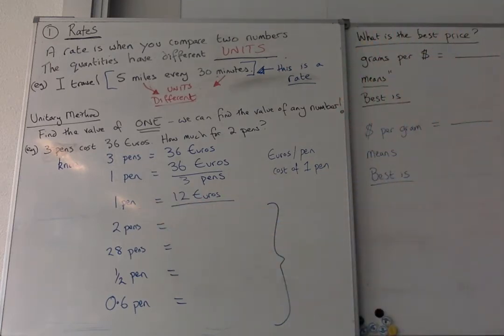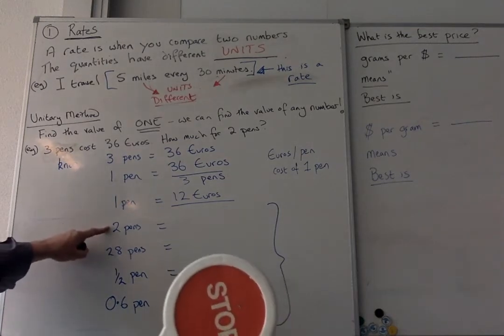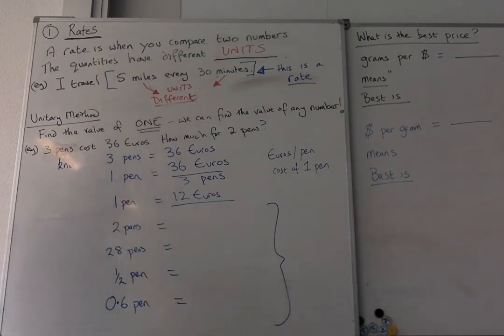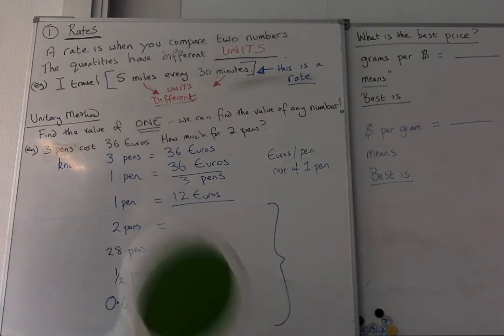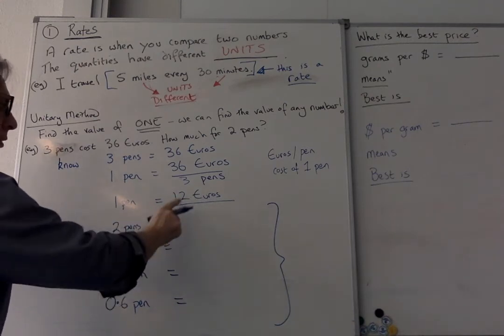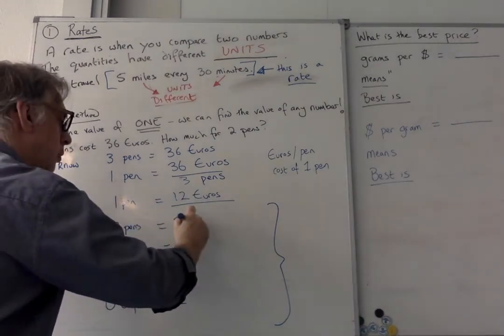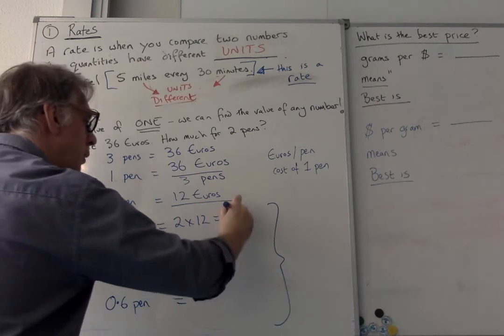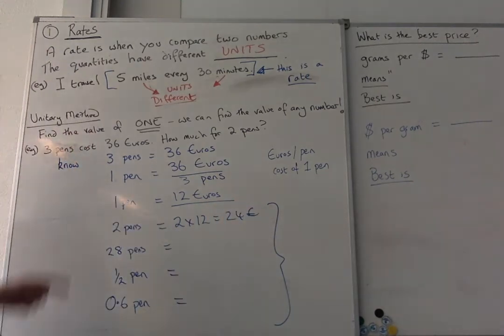Now, the power of that is you can work any number. So stop the video and work out how much it's going to be for two pens. Now you know this. OK, you press go. Easy peasy. If one pen is 12, two pens is two lots of that. So two lots of 12 is 24 euros. OK, stop the video. Do the next three. Then come back and see what happens.